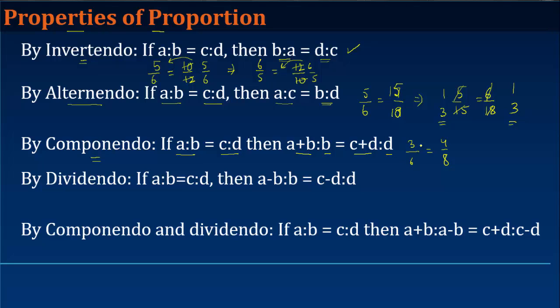Then a plus b will be equal to 3 plus 6, or 9, divided by b, which is 6, is equal to c plus d, which is 4 plus 8, or 12, divided by d, which is 8. Now if you notice, this is 3 by 2, this is again 3 by 2. So componendo also holds true.